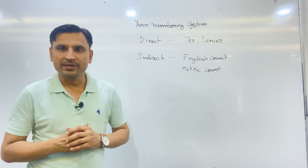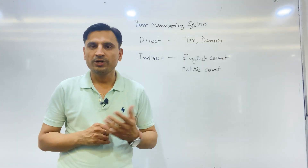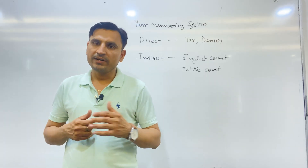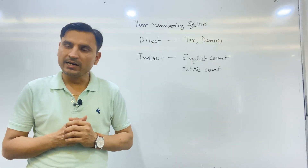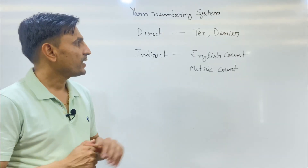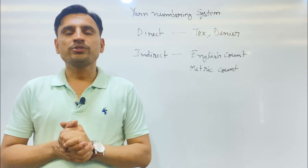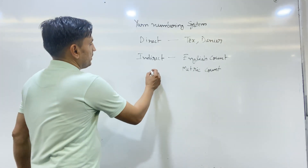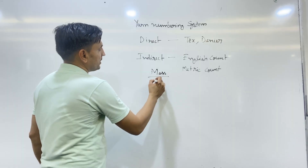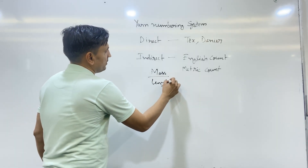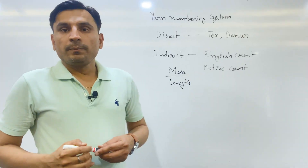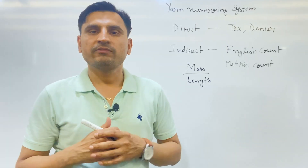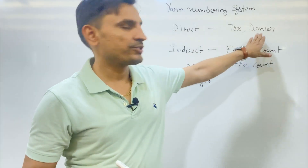Yarn numbering system is a system in which a number is given to the yarn according to the coarseness or fineness of the yarn by using different parameters and different units. Yarn numbering system is of two types: direct yarn numbering system and indirect yarn numbering system. In case of direct yarn numbering system we use the principle of mass per unit length — the number is given by measuring the mass of a unit length of yarn. Mass is the weight of the yarn and length is the measurement of the yarn in the lengthwise direction.